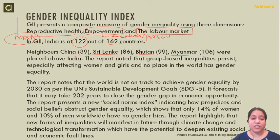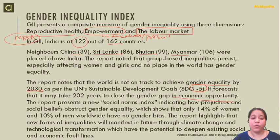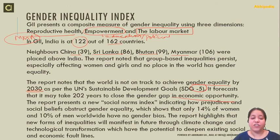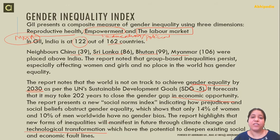The report notes that group-based inequalities persist, especially affecting women, children, and girls. No place in the world has achieved gender equality, and our Sustainable Development Goal number 5 is to achieve gender equality by 2030. This report says it will take 2,002 years to close the gender gap in economic opportunity. A new social norms index indicates that only 14% of women and 10% of men worldwide have no gender bias. The report also highlights that new forms of inequality will manifest through climate change and technological transformation, making it essential that women are included in STEM fields.